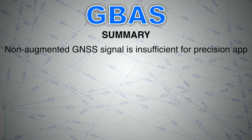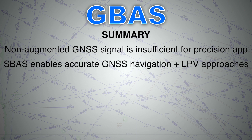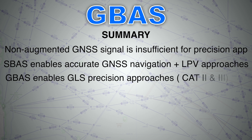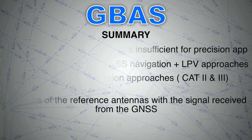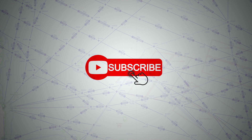To summarize: non-augmented GNSS signals do not have sufficient accuracy for precision approaches. SBAS enables accurate navigation using GNSS plus approaches with vertical guidance such as LPV. GBAS enables approaches and landings using GNSS to CAT 2 or CAT 3 minimums. GBAS corrections are derived by comparing locations of precisely known reference stations with signals received from GNSS satellites. The measurements are processed at the GBAS substation, corrections are calculated, and transmitted to the aircraft using VDB — VHF Data Broadcast.